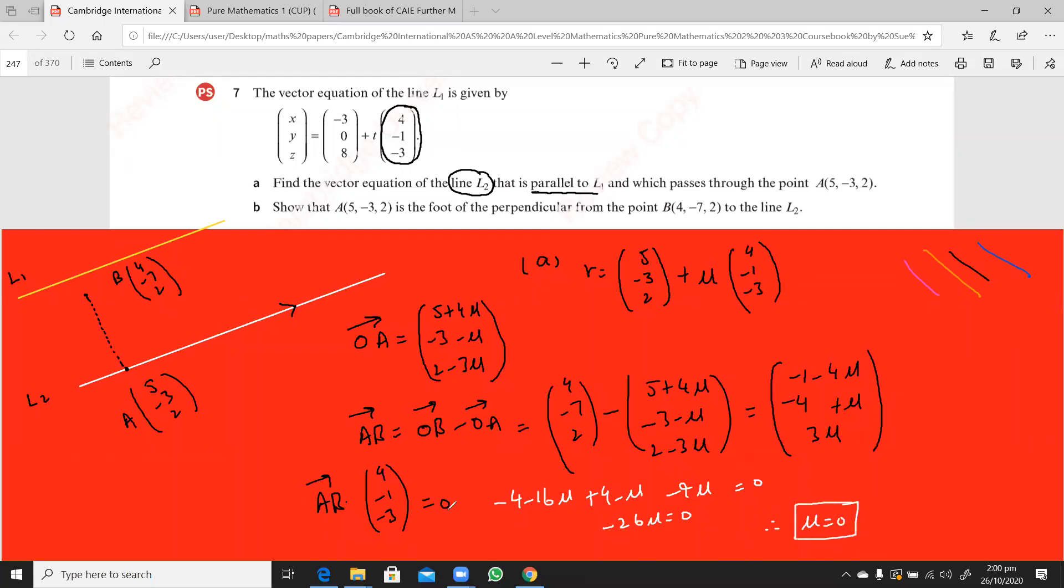So I have minus 26 mu, that is equal to 0. So this means mu is 0. So when mu is 0, you put that into this OA over here. So you will get this OA as when you put mu equal to 0, this becomes 5, minus 3, 2. And that is what we had to show that this point A is 5, minus 3, 2. So remember the steps.